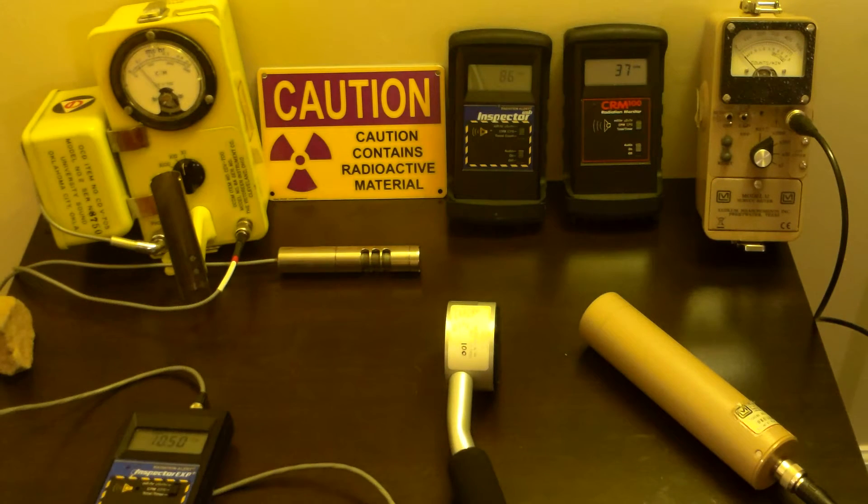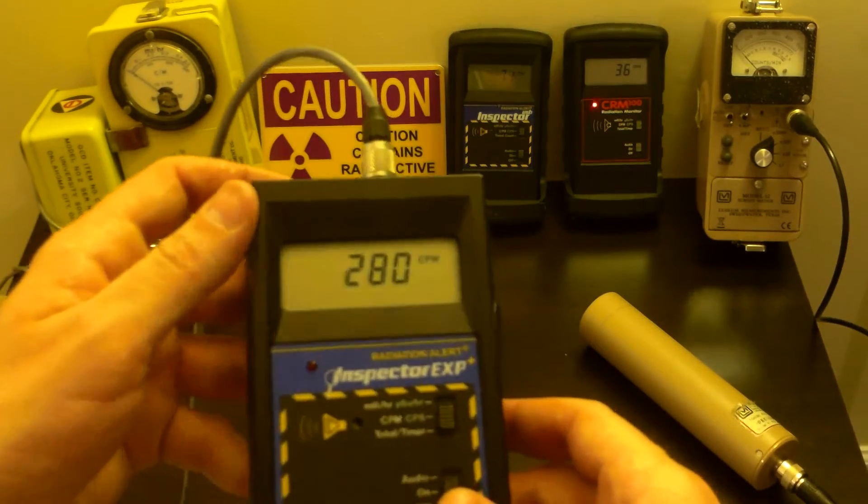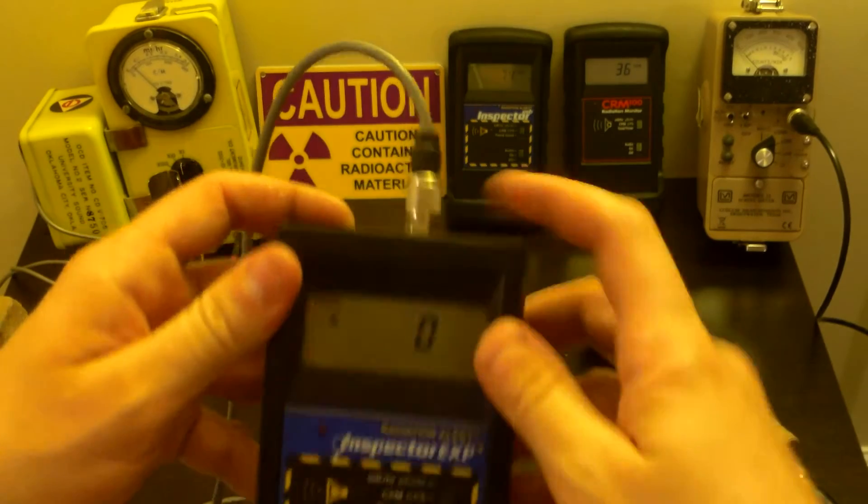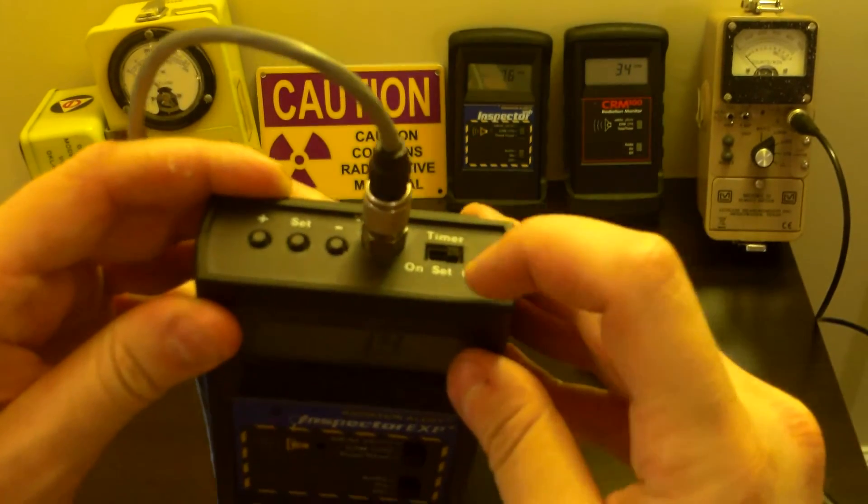So, each set of readings that you take must be exactly the same in geometry, the way everything is placed up. Make sure it's all exact. Now, remove the uranium sample. And take the uranium sample, put it far away, like a different room. Now, you're going to run this unit, and you're going to run it for a period of time. Let's put it on timer mode.